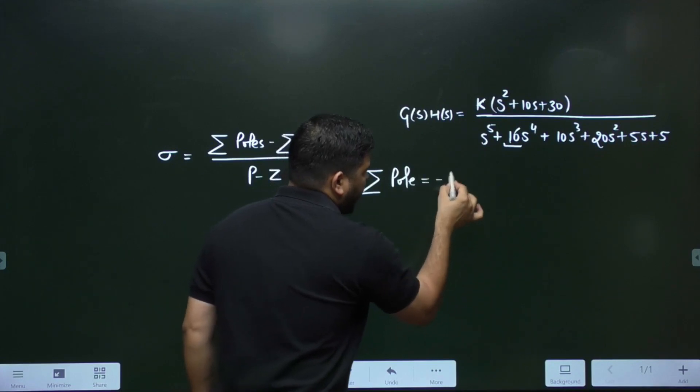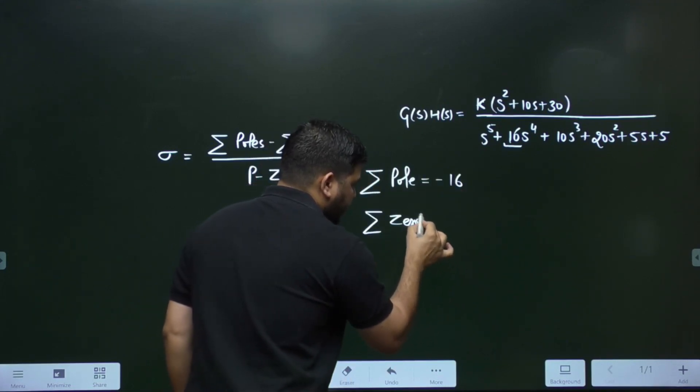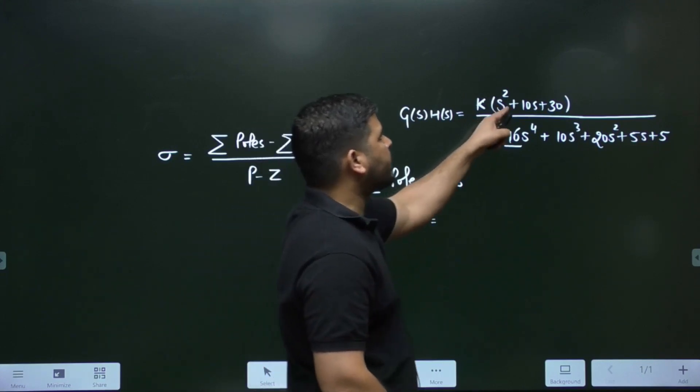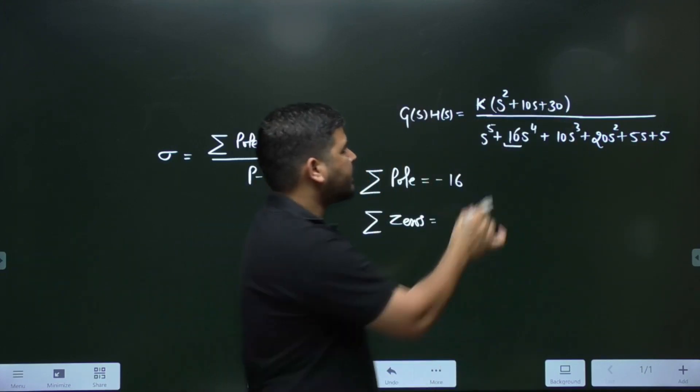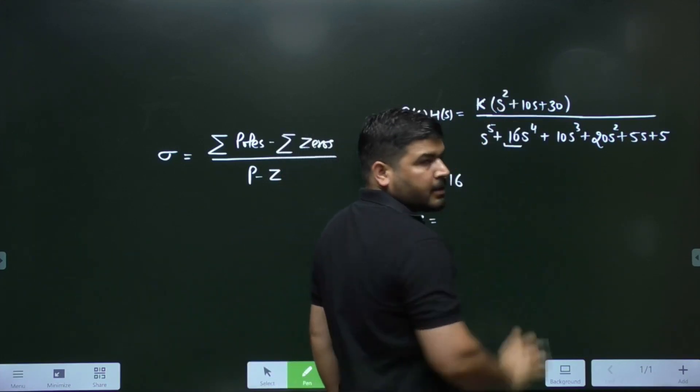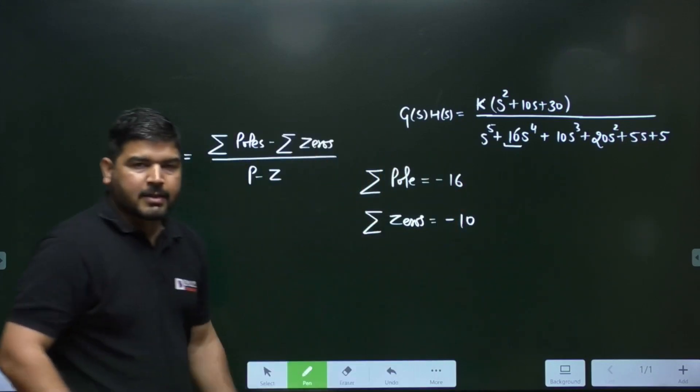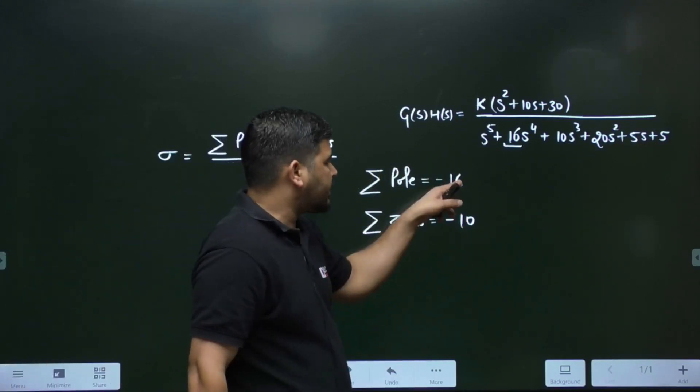And what is the sum of zeros? You can go in the numerator and look at the second highest power. Highest power in the numerator is 2, second highest is 10. You take the negative of that, so it will be minus 10. This is the sum of zeros and this is the sum of poles.